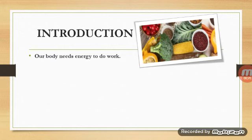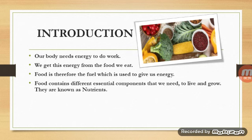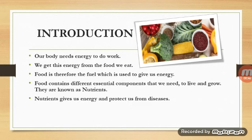In this chapter we will be learning about the components of food that we eat. Our body needs energy to do work, and we get this energy from the food we eat. Food is therefore the fuel which gives us energy. Food contains different essential components that we need to live and grow, and these are known as nutrients. Nutrients give us energy and protect us from diseases.